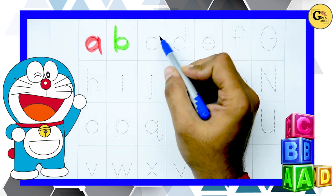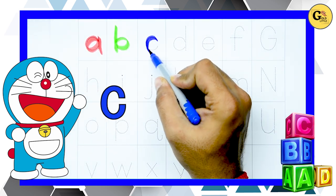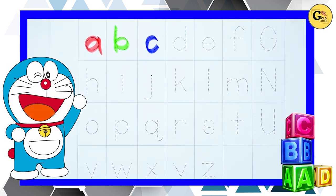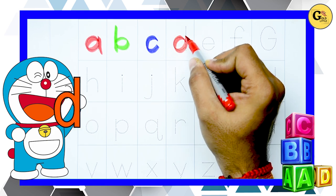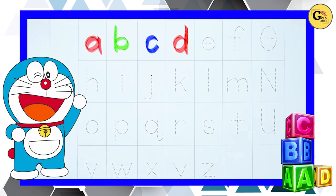Now we write c. Yes, it's c, blue color. C. Red color, d. Yes, it's red color, d.